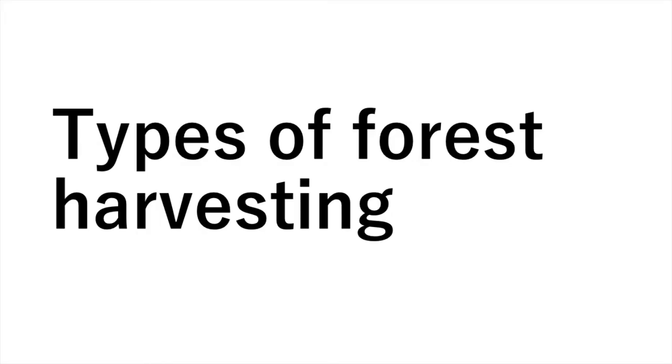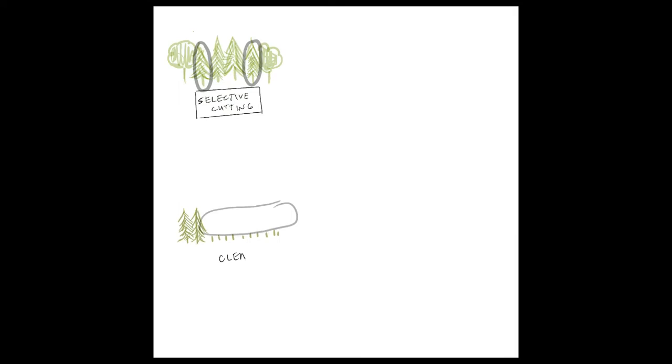Now we're going to talk about forest harvesting. The first method is selective cutting, where you just choose a few species. The second is clear cutting, where you take all that are available. And the third is shelter wood cutting, where you allow new growth to come up once seedlings have been established.